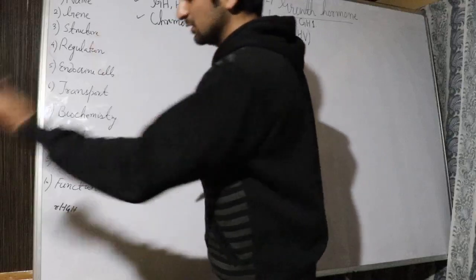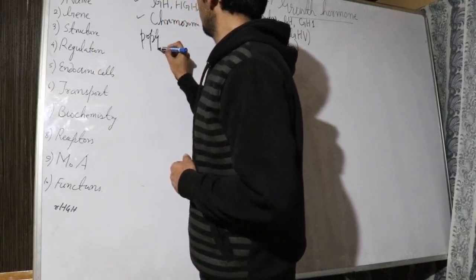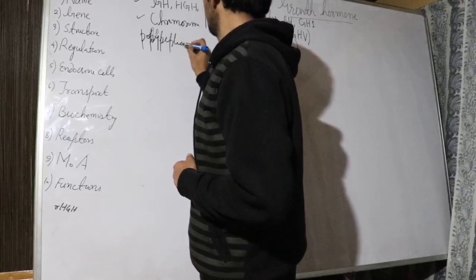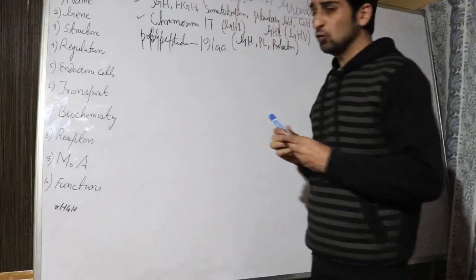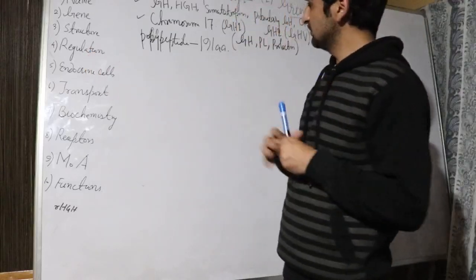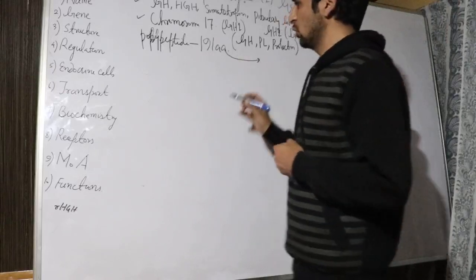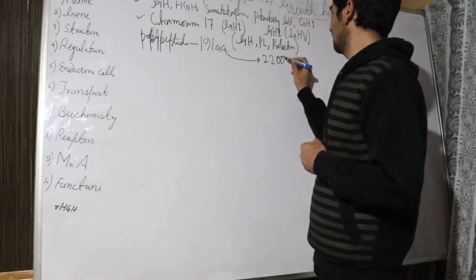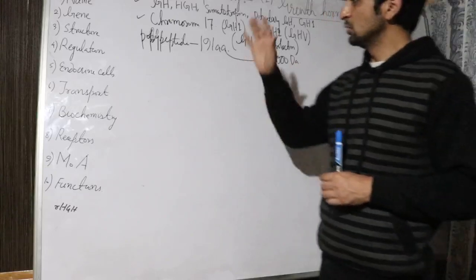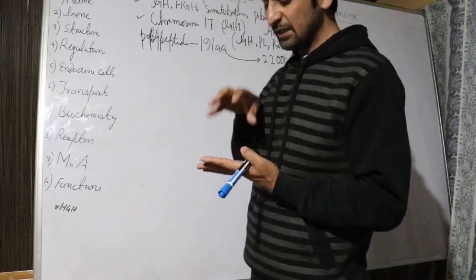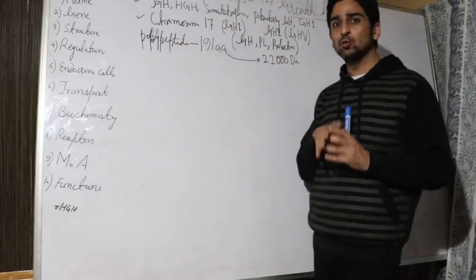The growth hormone is a polypeptide and it contains 191 amino acids. It is a single long chain polypeptide with a molecular weight of around 22,000 Daltons. Hormones are generally low molecular weight substances.